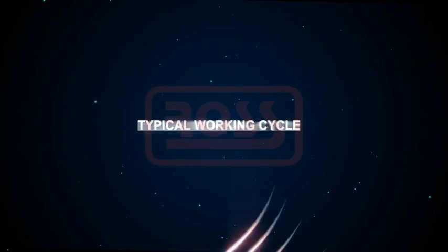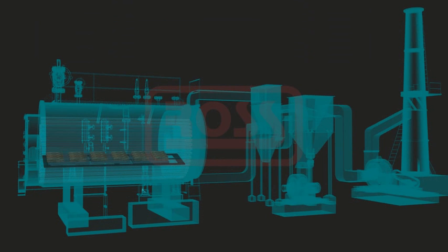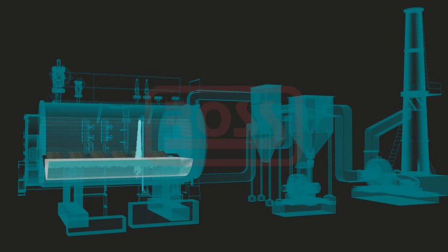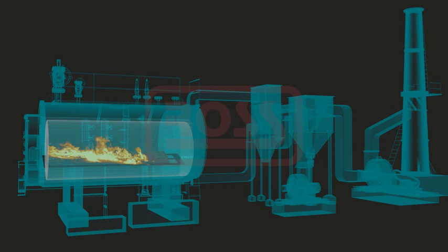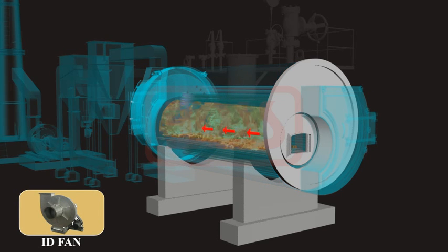Typical working cycle: Soft feed water is first filled in the boiler shell by starting the feed water pump. Normal boiler level is maintained automatically. Fuel bed prepared on the grate bars is then ignited manually. An ID fan is started to provide necessary air draft for combustion.